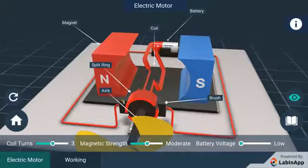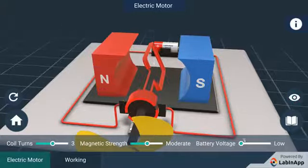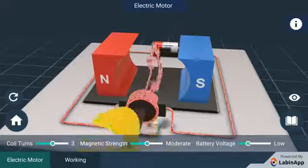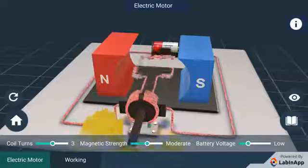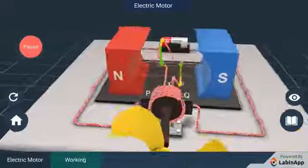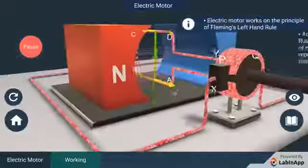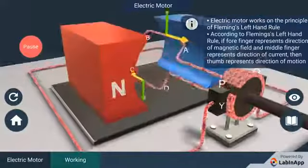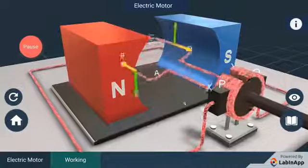Current in the coil enters from the source battery through conducting brush and flows back to the battery through the other brush. When we apply Fleming's left-hand rule to find the direction of the force on a current carrying conductor in a magnetic field,